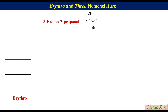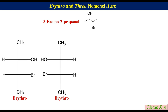Let's put CH₃ on the vertical lines. Now put both H atoms on the left, and OH and Br on the right. The second erythro isomer will be its enantiomer, like this.